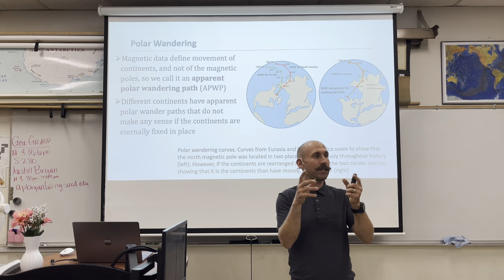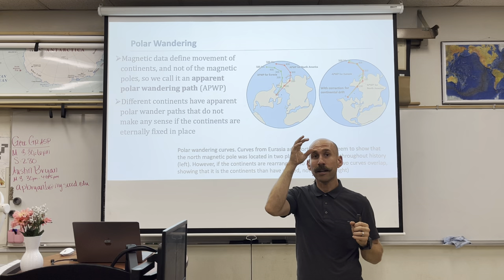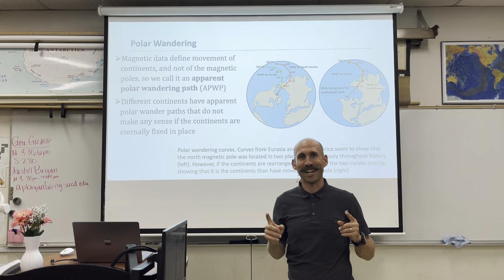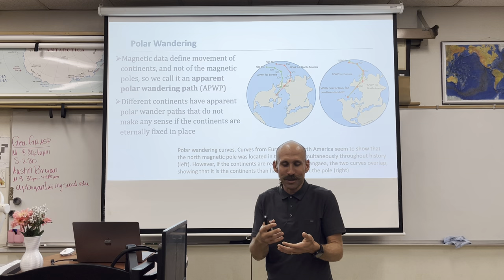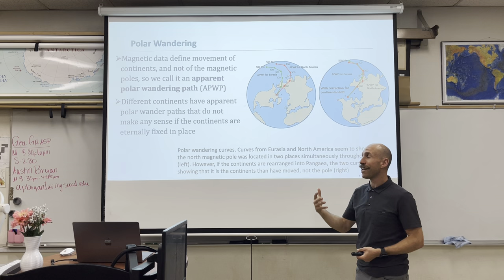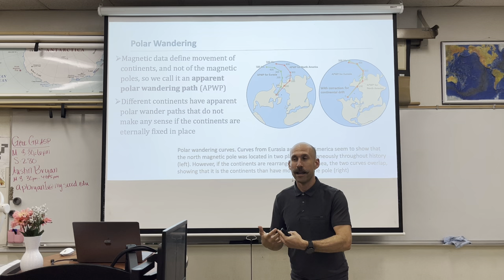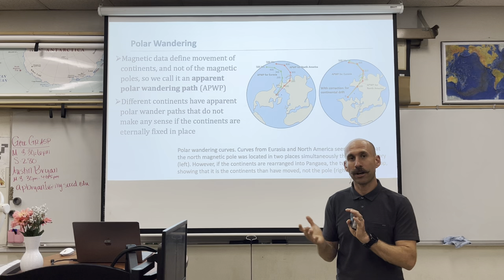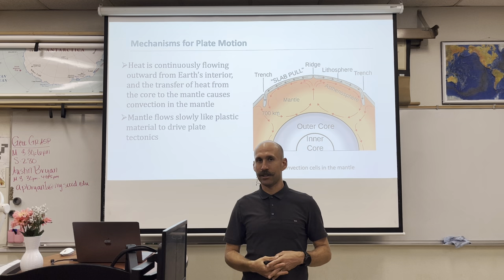But if you bring the continents together, they point to the same place. Apart, the paleomagnetism recorded in the rock record shows they point to magnetic poles in different places; bring the continents together and rocks of varying ages all point to a similar location in Earth's magnetic field. This is called paleogeography — the locations of continents in ancient times. The rocks tell us Earth's history, and the magnetic signatures support the idea of plate tectonics and continental drift.